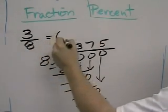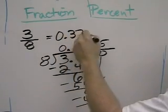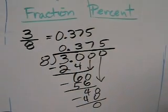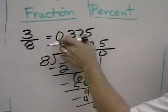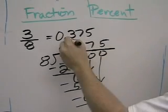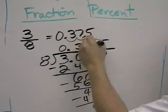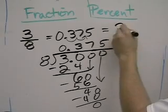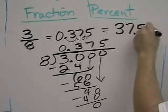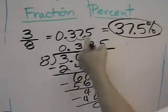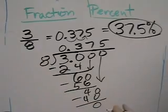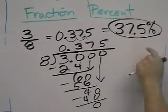So now the decimal is 0.375. We've learned earlier to turn a decimal into a percent, you move the decimal over two places, so the percent is 37.5%. So 3 eighths is the same thing as 37.5%.